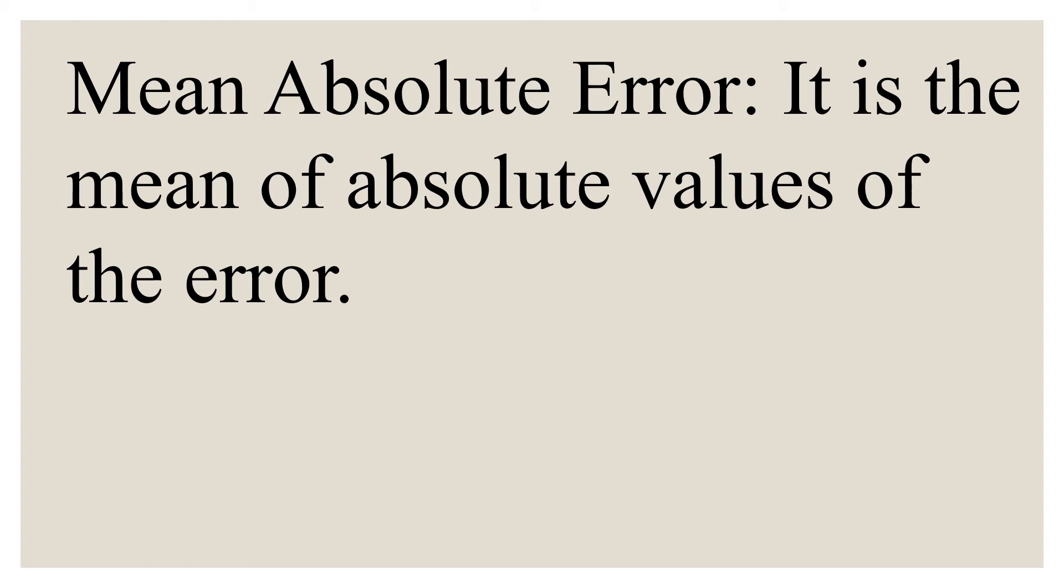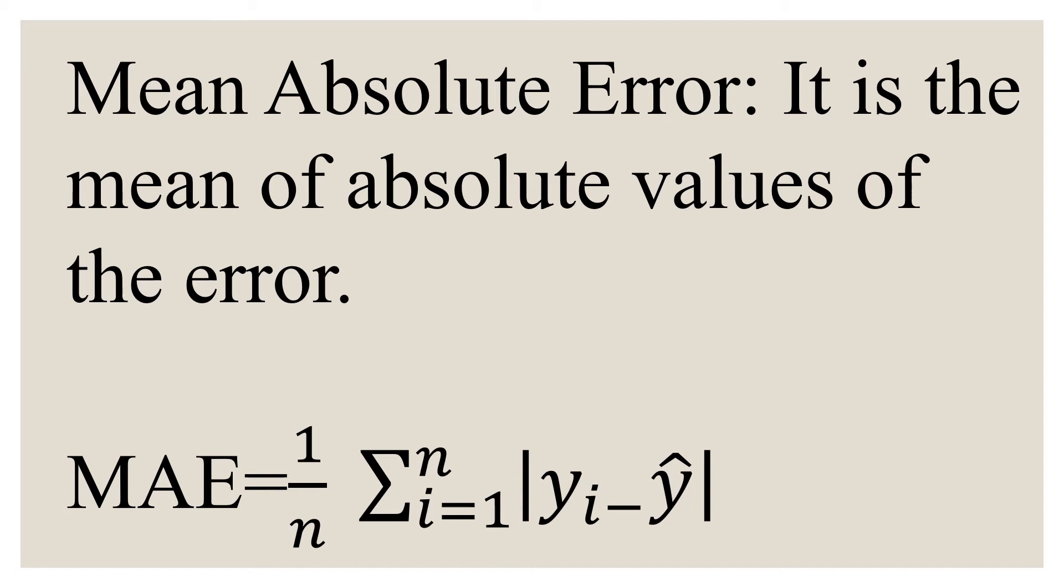To avoid the cancellation of error terms, we use the absolute values of the error. Mean absolute error is given by the following formula: 1 upon n summation of i equals 1 to n, absolute value of yi minus y hat, where yi is your actual y values and y hat is nothing but your predicted values.